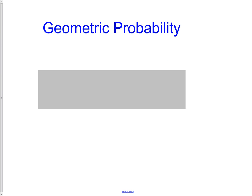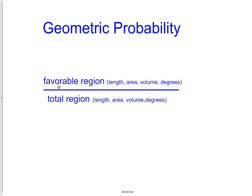When we're talking about probability, what we want to do is take the favorable region — it could be a length, it could be an area, it could be a volume, or it could even be in degrees — and divide that by the total region. You can think of this as what you want to happen over the total possibilities of what happens.